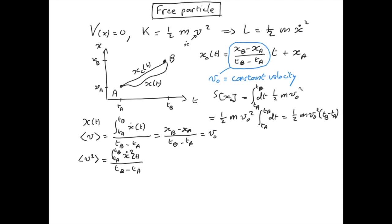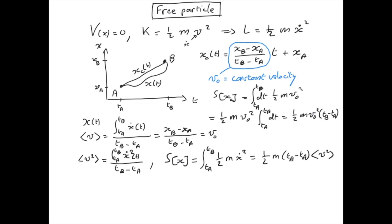Let's now calculate the action for this arbitrary path x(t). That's the integral between t_a and t_b of half m x-dot squared, which I can also write as half m times (t_b minus t_a) times the average of v squared — using the expression for the average of v squared I just defined.